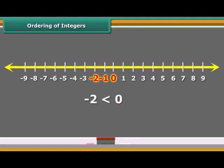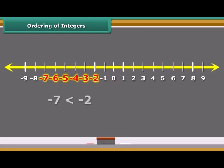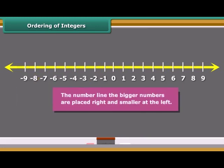Again, minus 2 is on the right of minus 7, so minus 2 is greater than minus 7. Thus, we see that on the number line, the bigger numbers are placed right and smaller at the left.